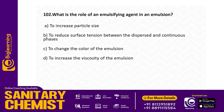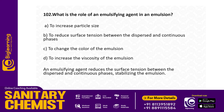What is the role of an emulsifying agent in an emulsion? Options: to increase the particle size; to reduce surface tension between the dispersed and continuous phase; to change the color of the emulsion; to increase the viscosity of the emulsion. Answer: Option B — to reduce the surface tension between the dispersed and continuous phase.